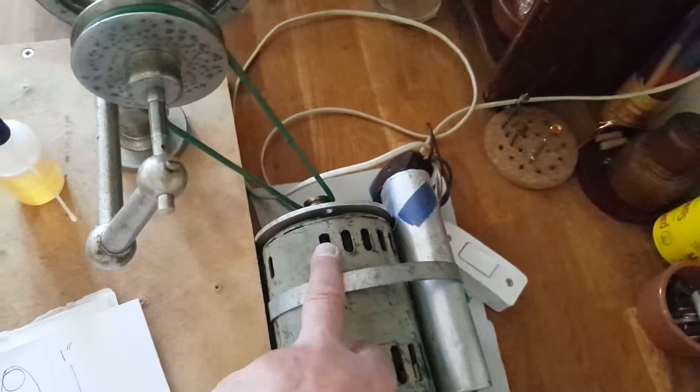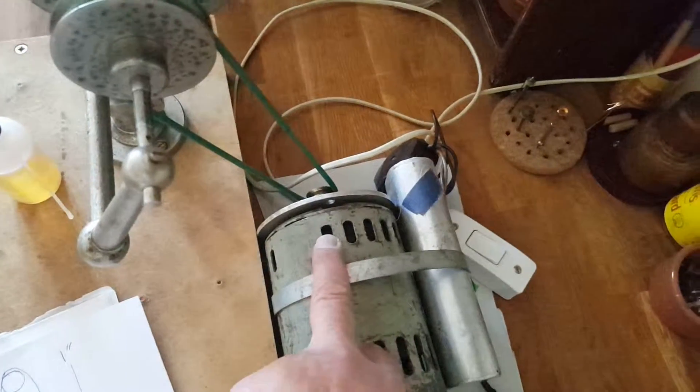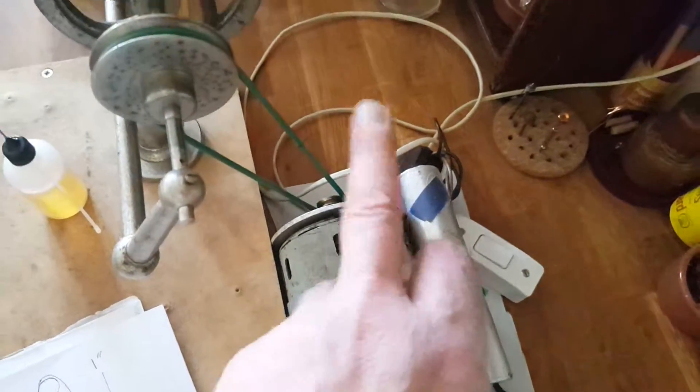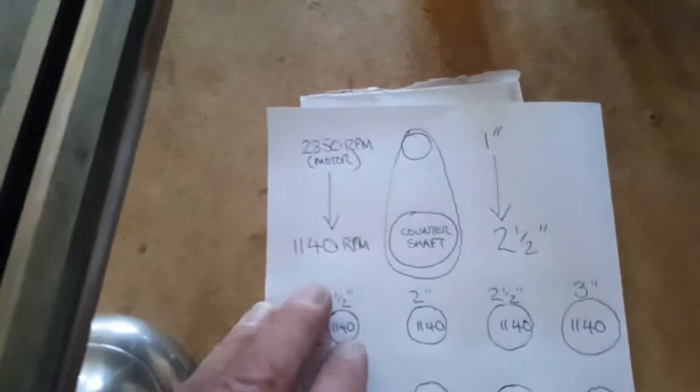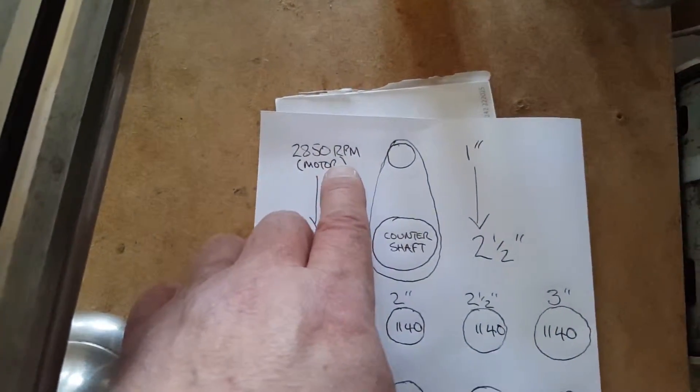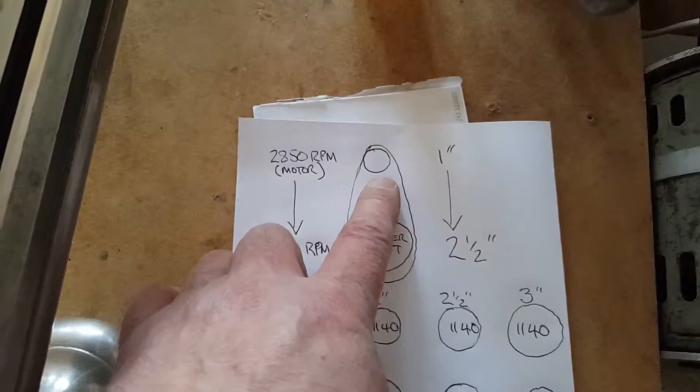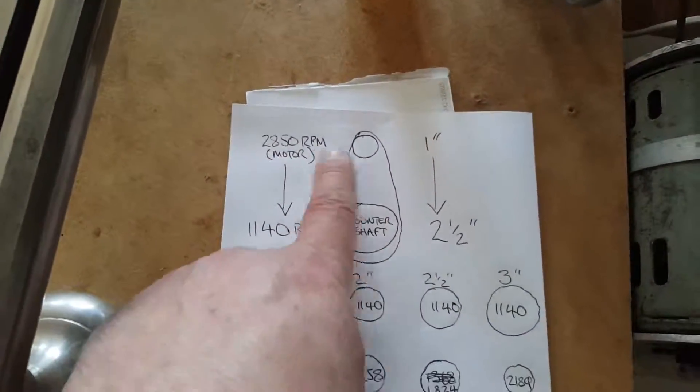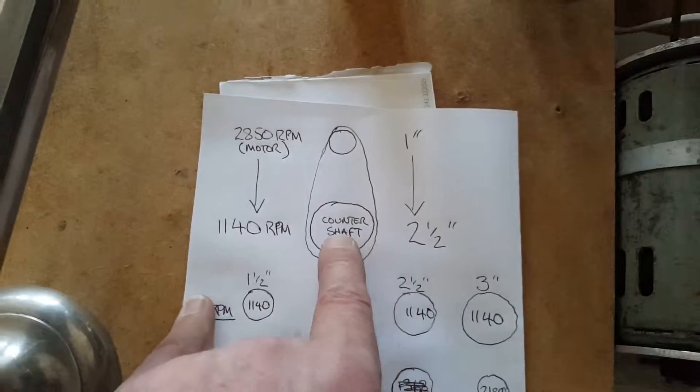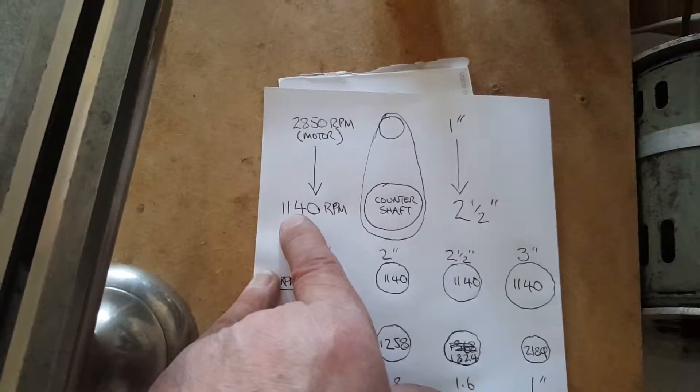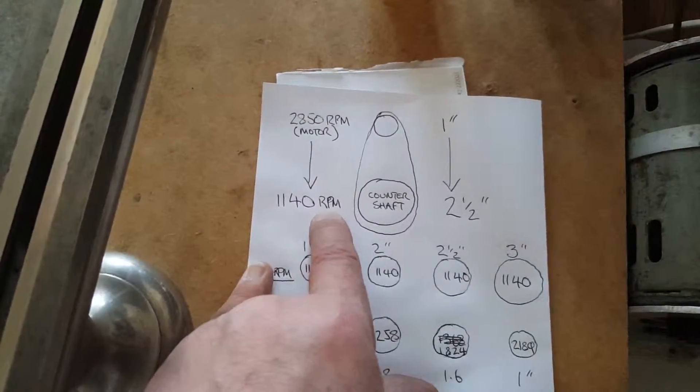So that was initially 2,850 RPM and we want to be able to control that so it reduces down 2.5 times. So here we have a 2,850 RPM off the motor which is a 1 inch pulley. It reduces speed 2.5 times through, that's the ratio, to the counter shaft here.